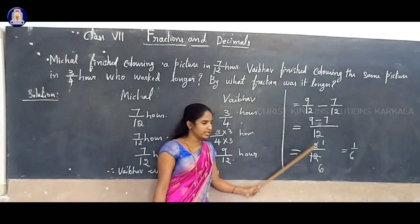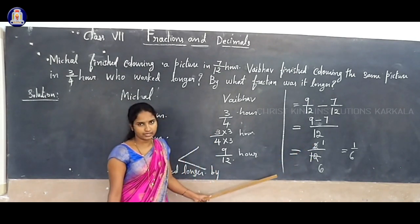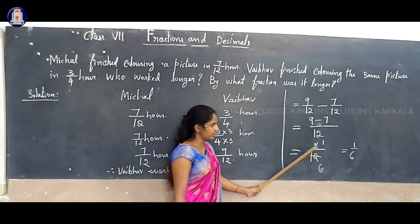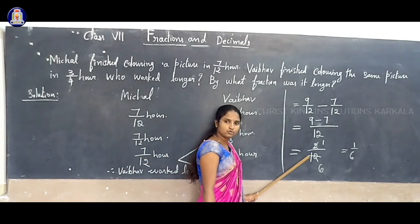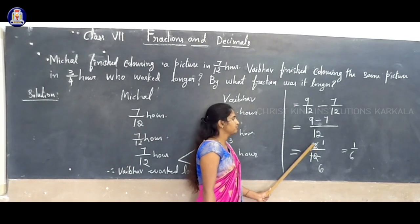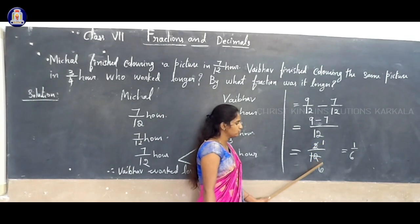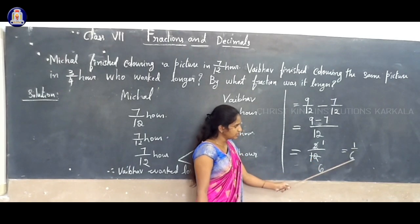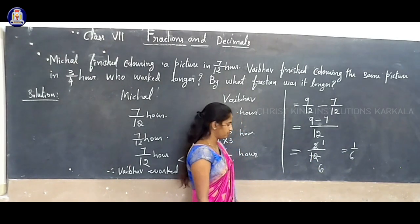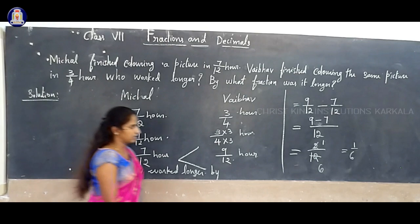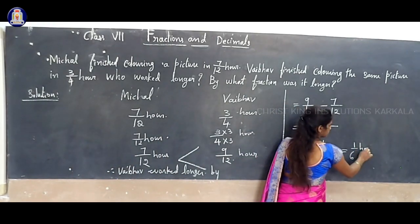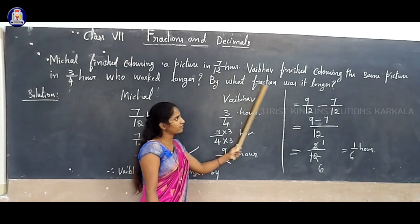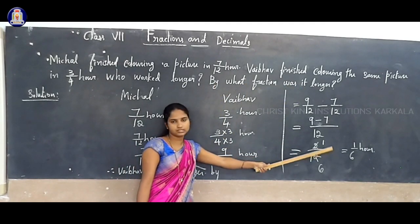9/12 minus 7/12 answer is 2/12. So 2/12 — both are even numbers, so we can divide by 2. 2 divided by 2 is 1, and 12 divided by 2 is 6. So the answer is 1/6. The answer to the second question — what fraction was it longer? — is 1/6 hour.